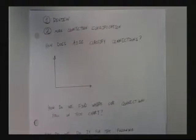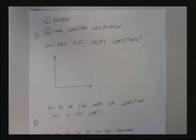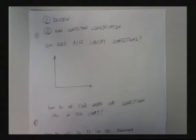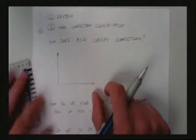So, first question: how does AISC classify connections? Well, they use a graph to do it.